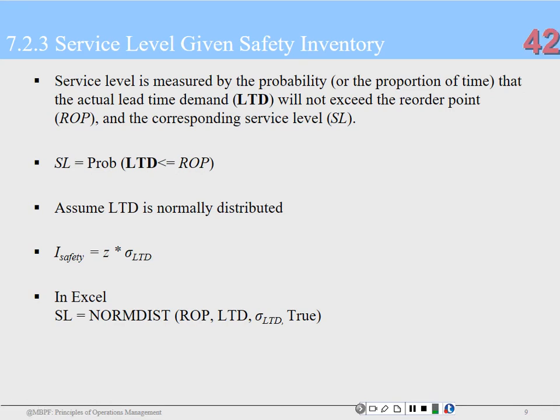We need to decide: how much safety stock should we carry? We should determine our customer service level — is it 99%, 95%, 80%? Make a strategic decision: this company intends to serve customers at this service level. That drives how much safety stock we need. The service level is the probability that lead time demand will be less than or equal to the reorder point. We assume lead time demand is normally distributed, and safety inventory equals the Z-score times the standard deviation of lead time demand.